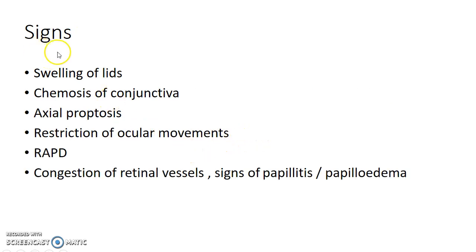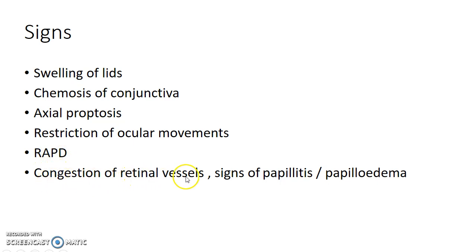What are the signs of orbital cellulitis? The signs include swelling of the lids, chemosis of conjunctiva, axial proptosis, restriction of ocular movements, and relative afferent pupillary defect. Congestion of retinal vessels are the chief signs of orbital cellulitis. There can also be papillitis or papilledema.